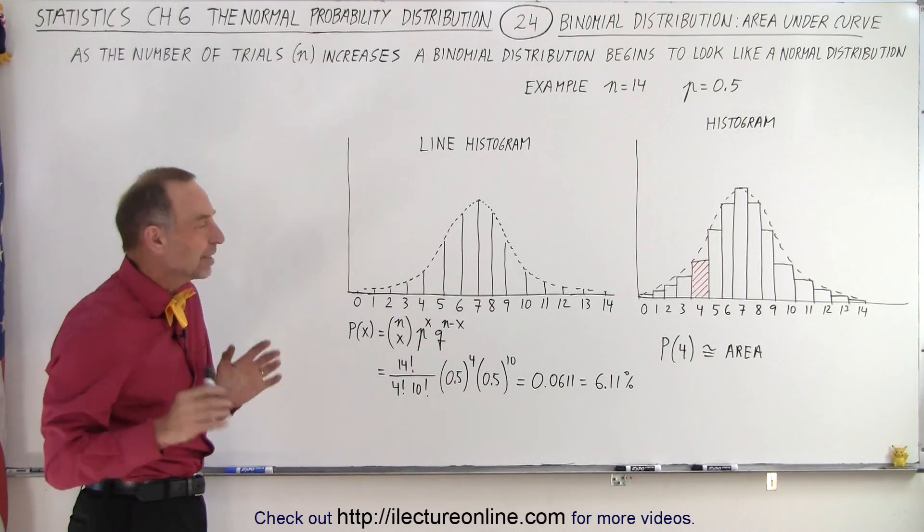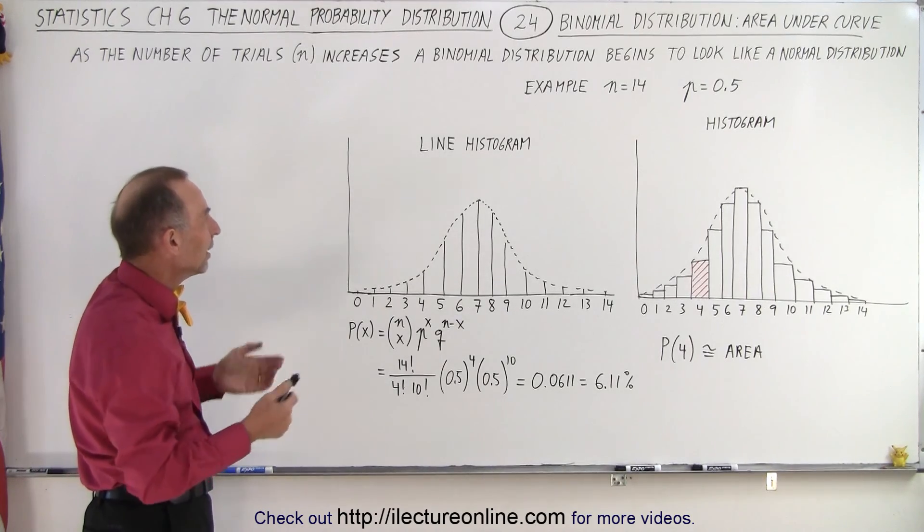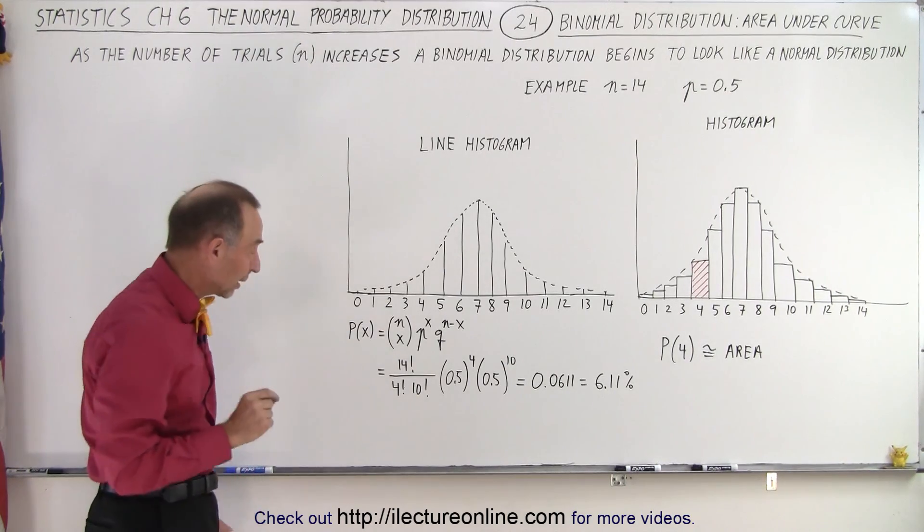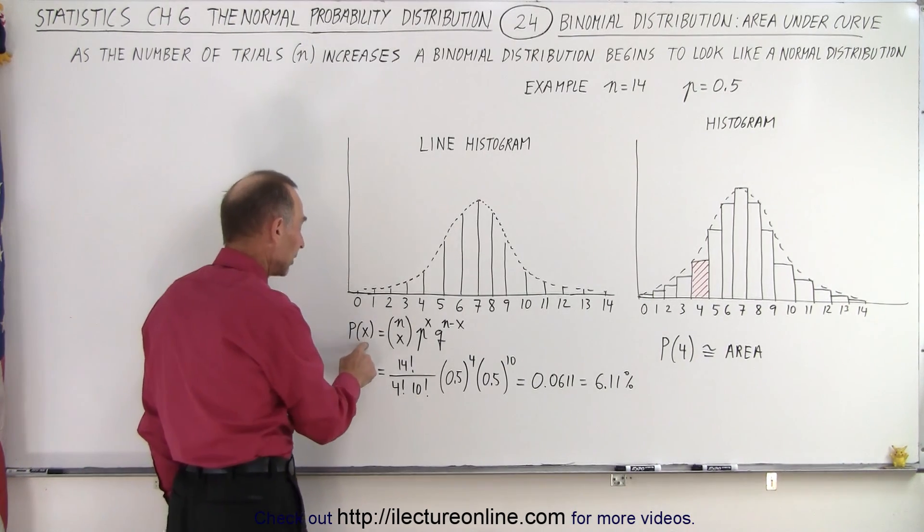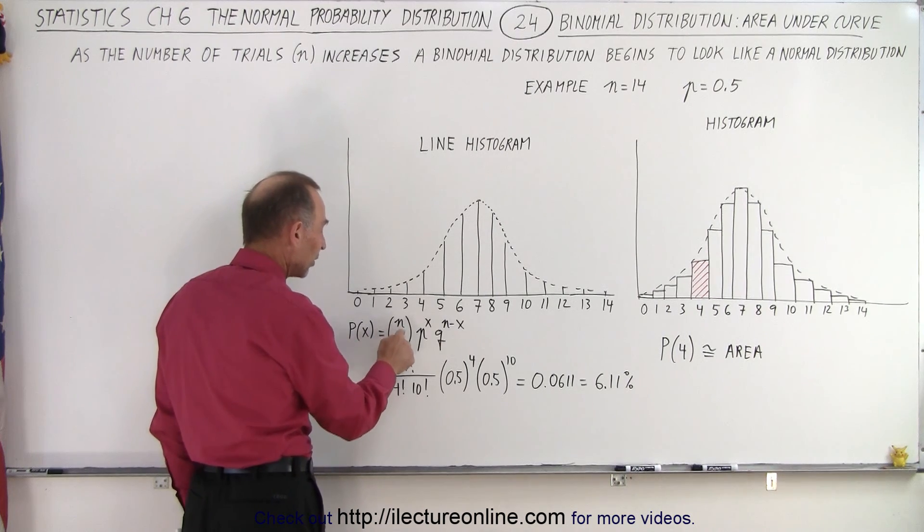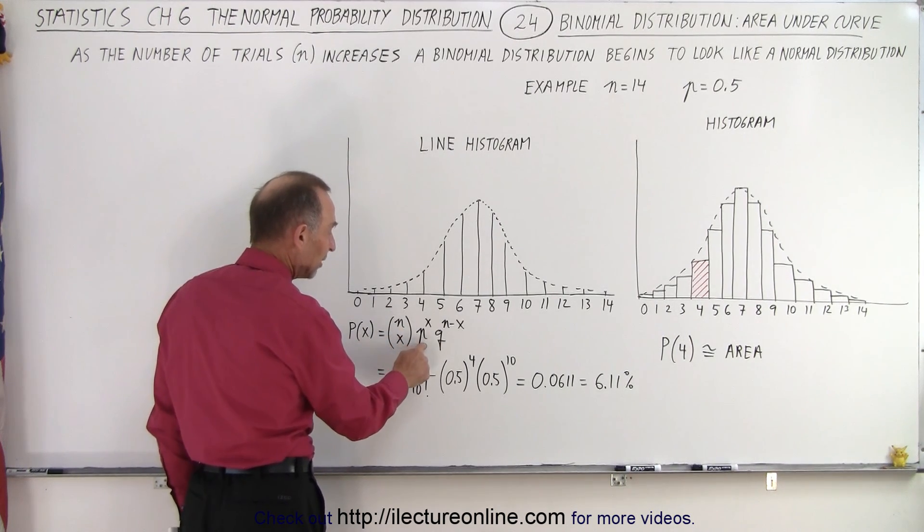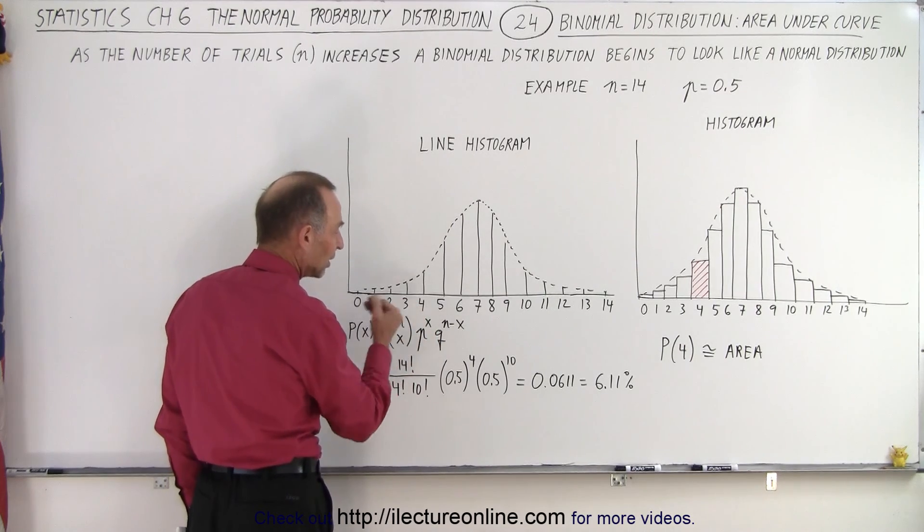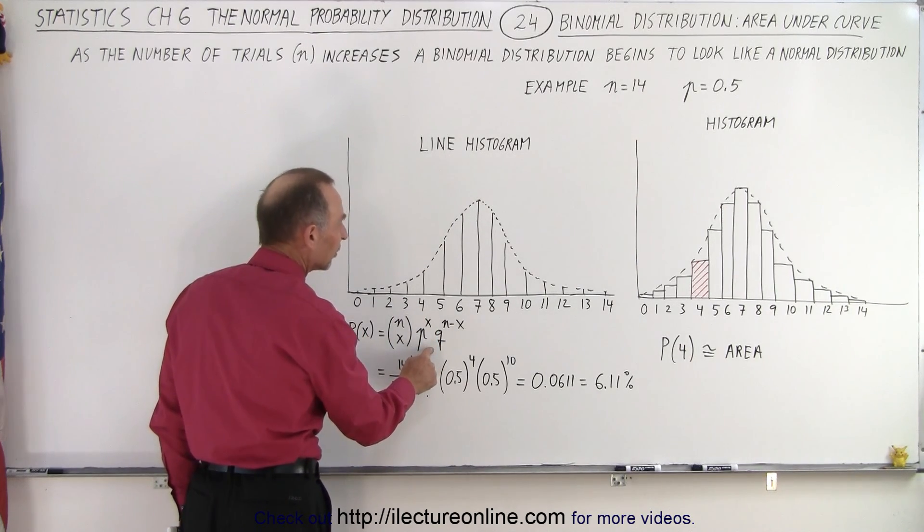Let's see if that is indeed the case. Here we've grabbed the equation to calculate the probability of a particular outcome x. When there's n trials, x is the outcome, p is the probability of success raised to the x power, and q is the probability of failure.